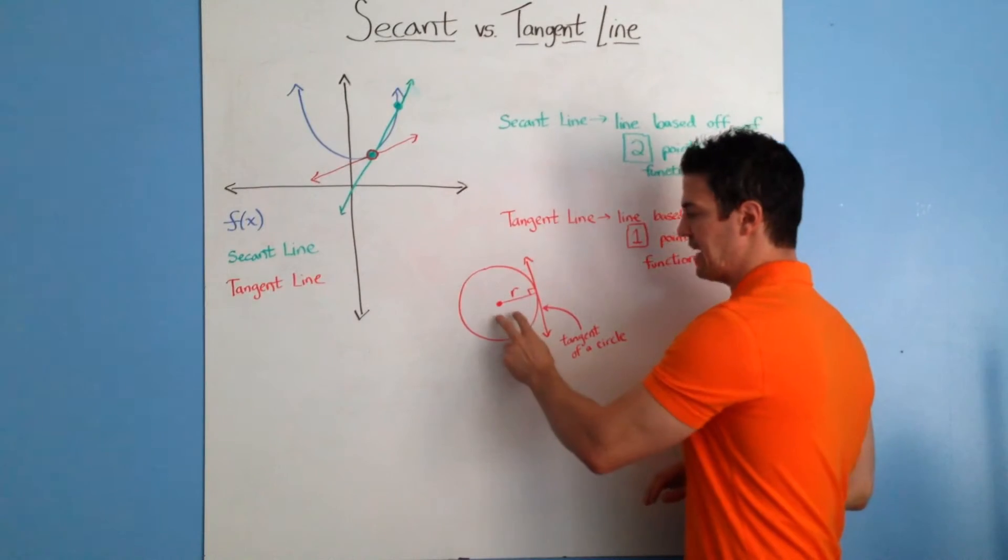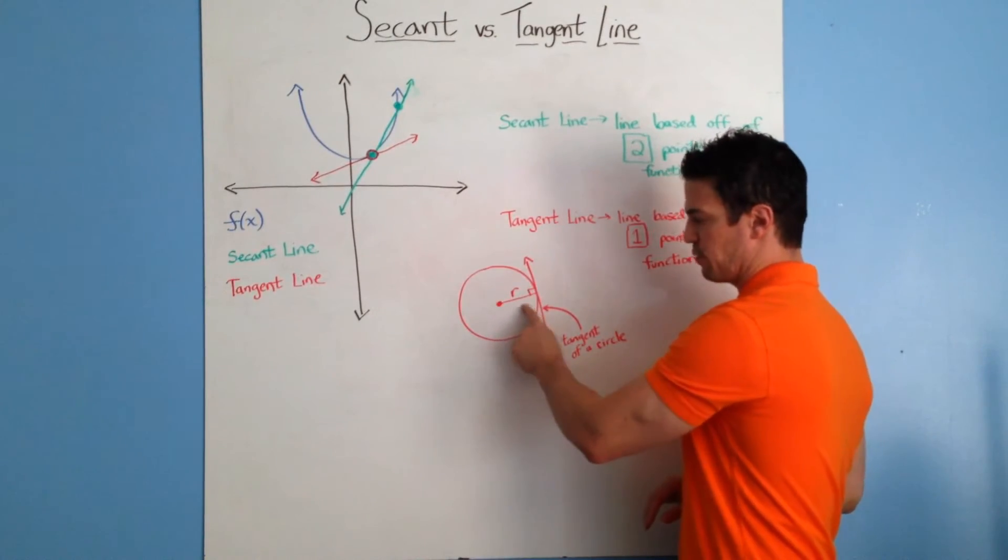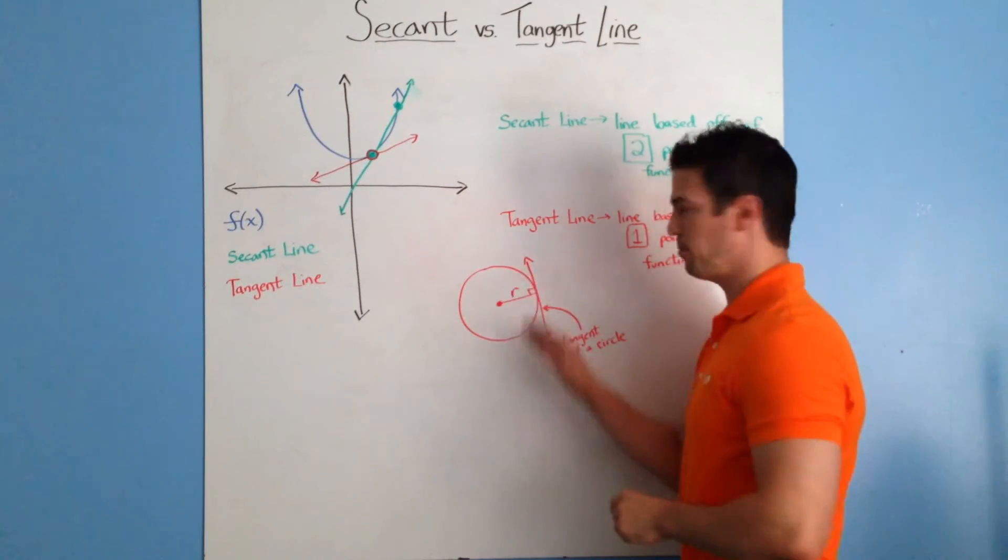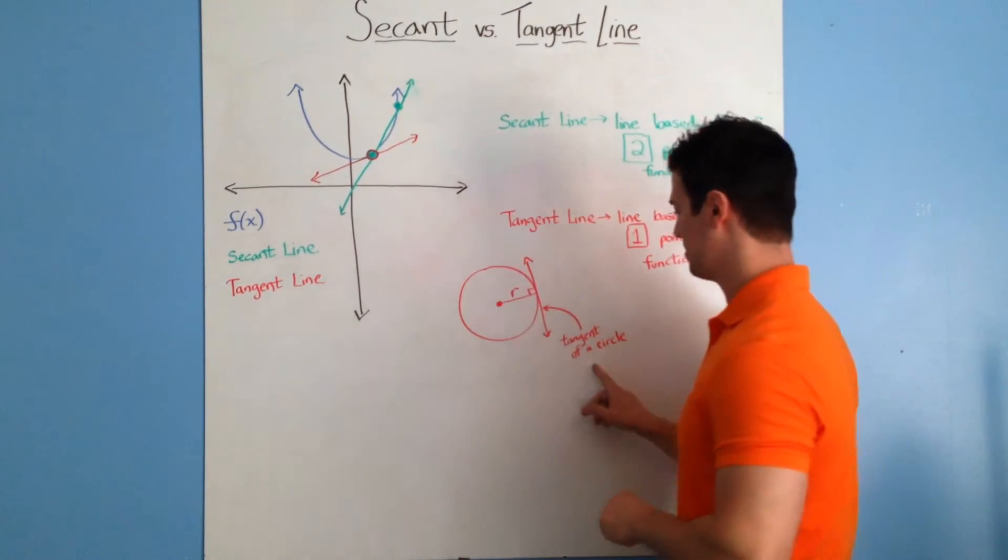You might remember the tangent line from geometry when you had a circle and the radius. The tangent line is perpendicular to the radius and only touches one point on the circle. That's the tangent of a circle.